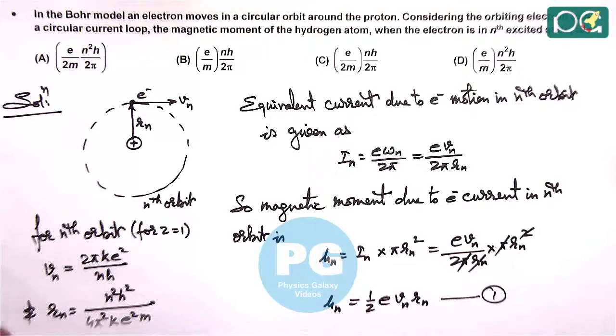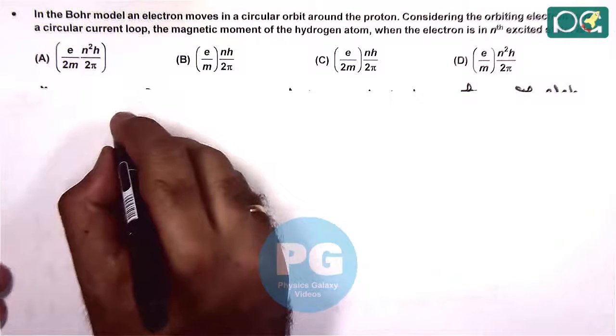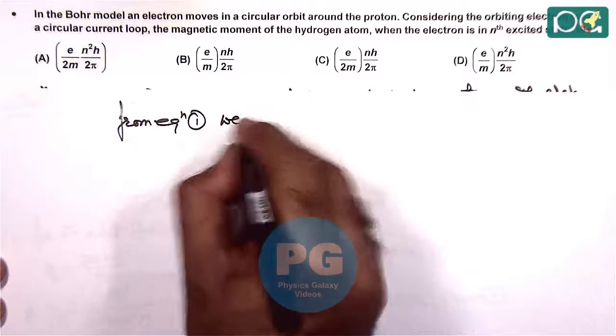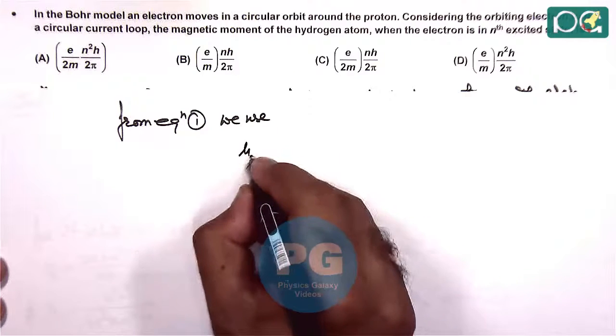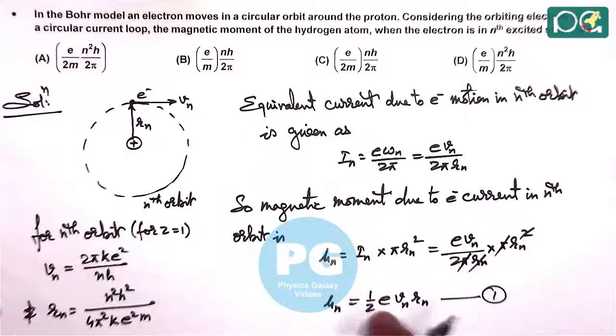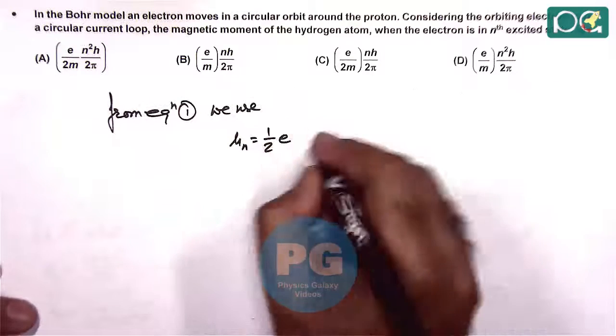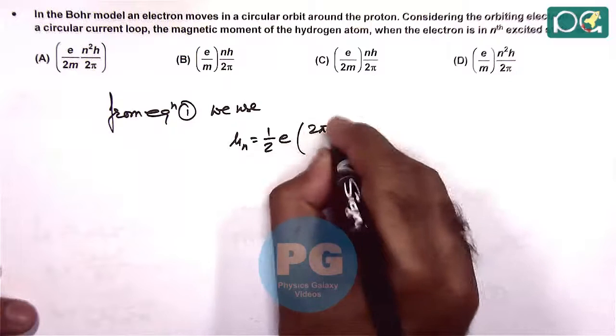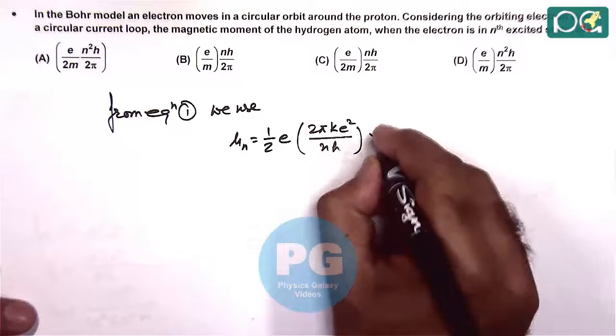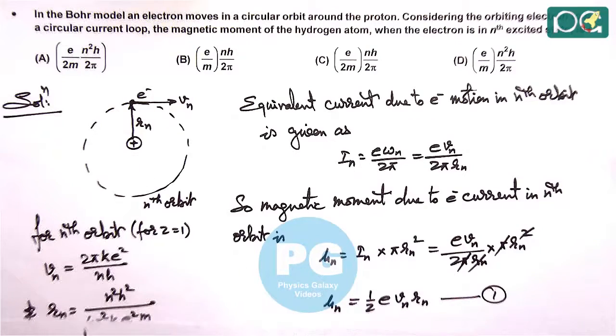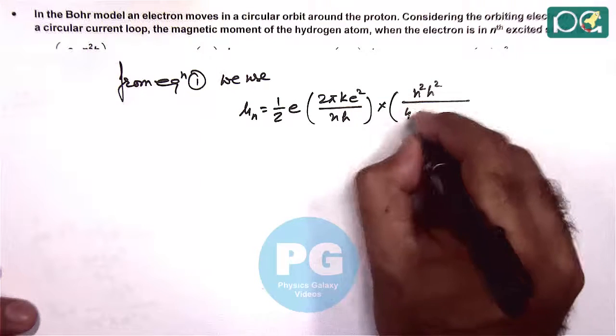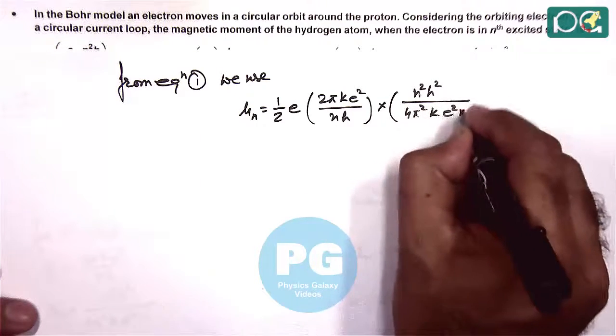So if this is our equation 1, we can write from equation 1 we use magnetic moment of nth orbit is half e, we substitute vn and rn from these values. This is 2π k e square by nh, multiplied by the value of rn, rn is n square h square by 4π square k e square m.